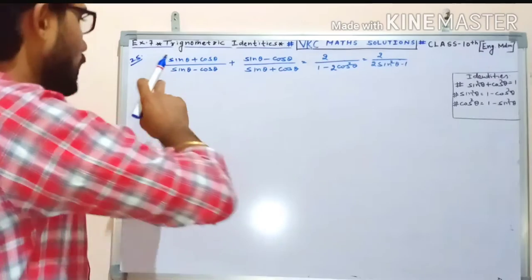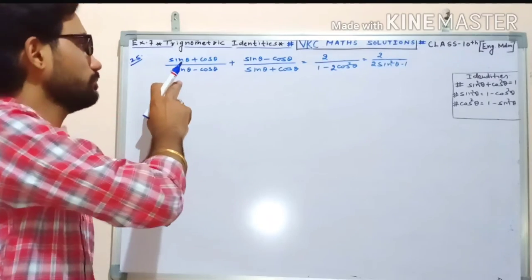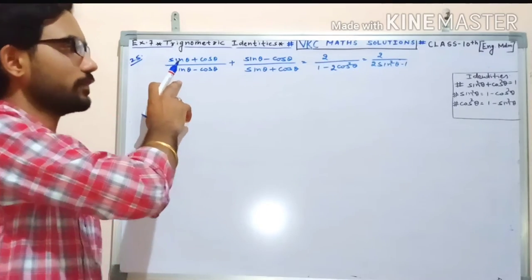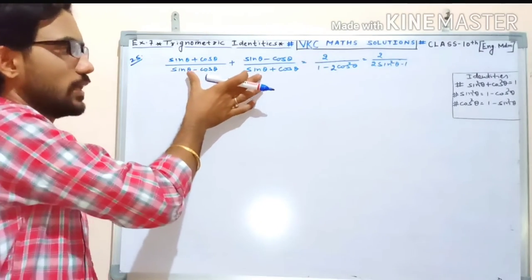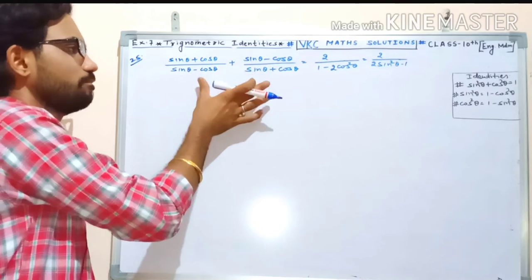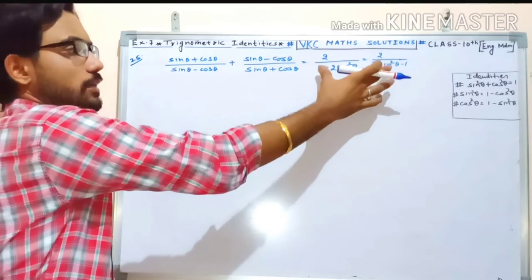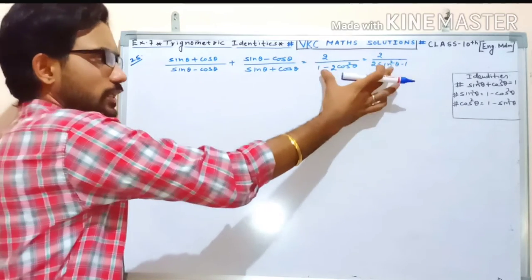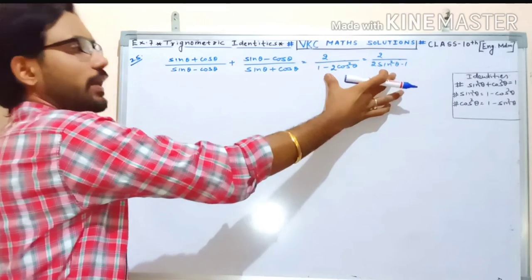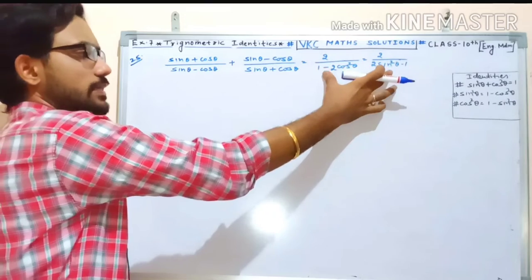Next question is 25. The question involves a left-hand side and a right-hand side, and we need to prove them equal.